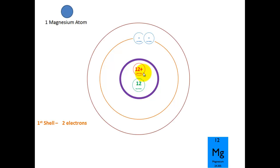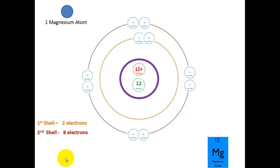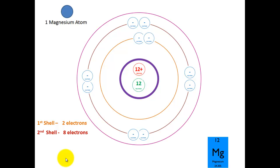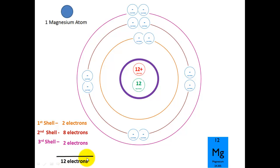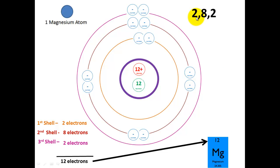So we have 2 electrons in the first shell, 8 in the second shell, and 2 in the outer shell to make a total of 12 electrons. We have a configuration of 2, 8, and 2 — 12 protons, 12 electrons, and an overall charge of 0.